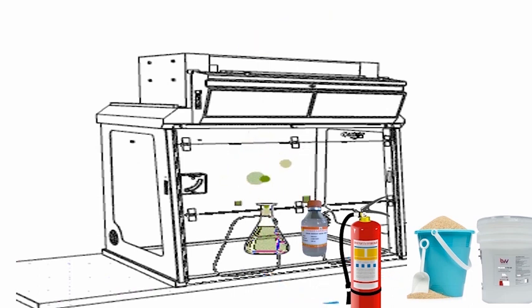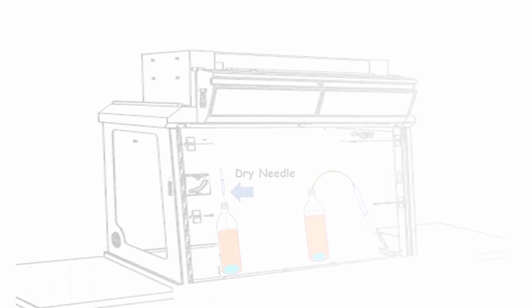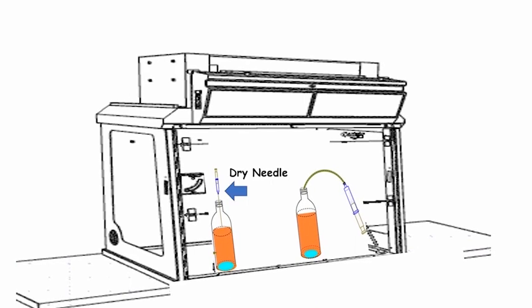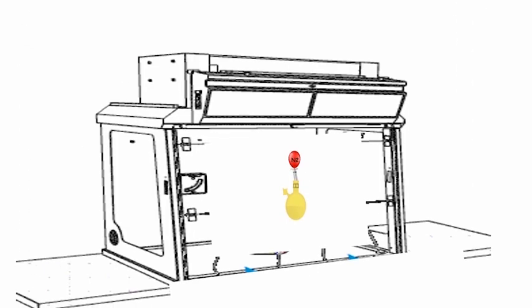Use a dry needle for taking out LAH solution and use nitrogen while taking it out from the syringe. Also put a nitrogen balloon to the reaction flask so that inert conditions can be maintained throughout the reaction.